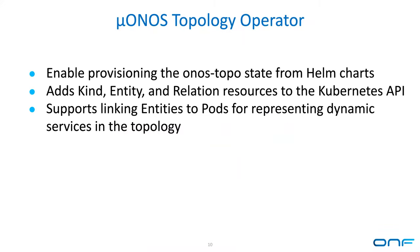That brings me to the micro ONOS topology operator. The ONOS operator has two sub-operators: the topology operator and the config operator — and from a Kubernetes perspective they look like different operators, each running in a separate pod. The topology operator is meant to provision topology entities, relations, and kinds from Helm charts, adding those types as custom resources in Kubernetes.